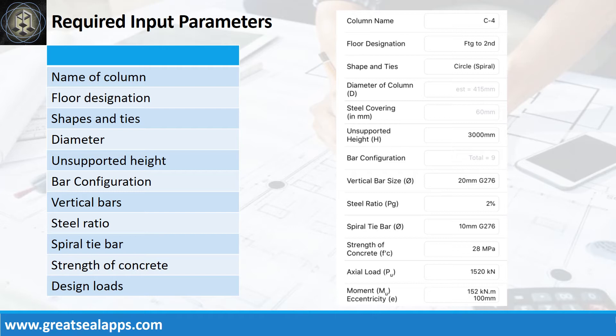Unsupported height 3000 mm, vertical bars 20 mm bar at grade 276, steel ratio 2%, spiral tie bars 10 mm bar at grade 276, strength of concrete 28 MPa, factored axial load 1520 kN, factored moment 152 kNm, and eccentricity 100 mm.